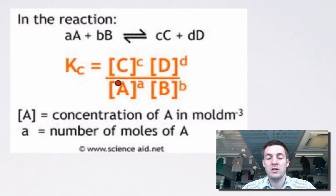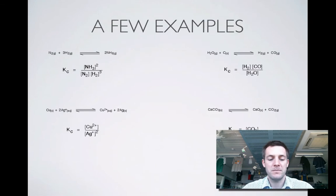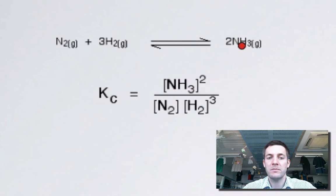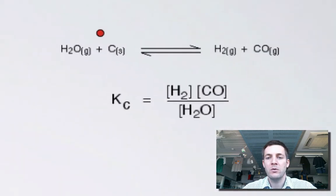You won't be asked to do calculations using these expressions — just to write them. Let's look at a few examples. Starting with nitrogen and hydrogen turning into ammonia: all substances are gases, so they all appear in the expression. KC equals the concentration of ammonia squared on top, divided by the concentration of nitrogen times the concentration of hydrogen cubed — squared because there are two moles of NH₃, cubed because there are three moles of H₂.